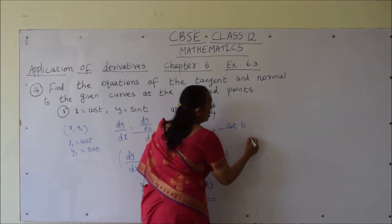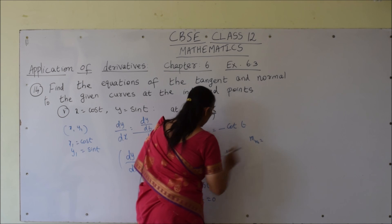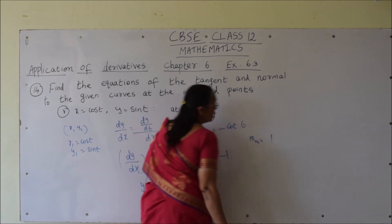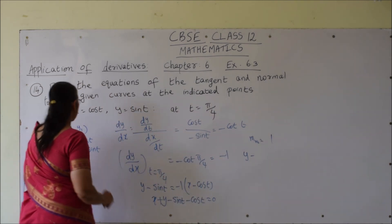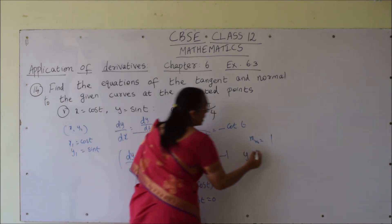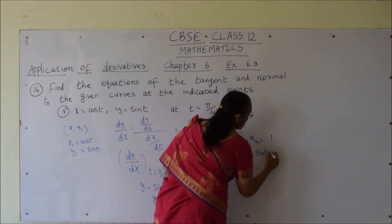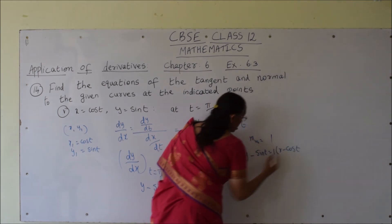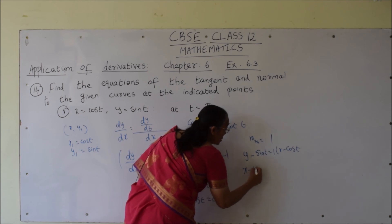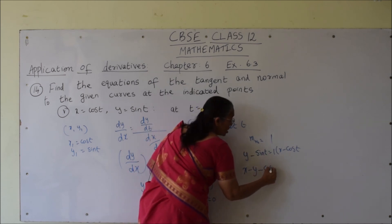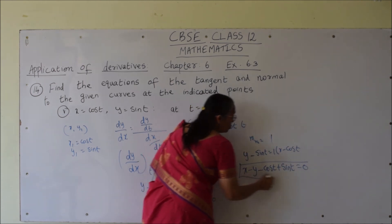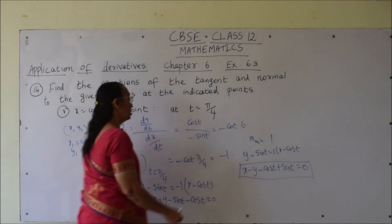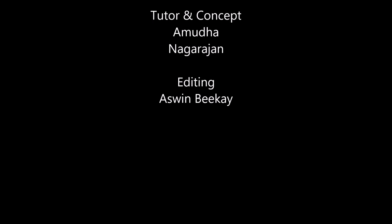For the equation of normal: slope of tangent is negative 1, so slope of normal is positive 1. So y minus sin t equals 1 times x minus cos t. Rearranging, x minus y minus cos t plus sin t equals 0. This is the equation of normal. Thank you.